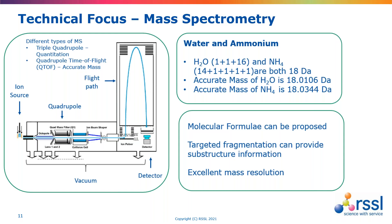An illustrative example: water (two hydrogens and one oxygen) has a nominal mass of 18 Daltons, as does ammonium (one nitrogen at 14 plus four hydrogens). These would be very difficult to distinguish by nominal mass alone. However, using accurate mass and naturally occurring isotopes, water has an accurate mass of 18.01 and ammonium 18.03, so our mass spectrometer can very easily distinguish the difference. Because of this, we can generate molecular formulas for unknown compounds and, by fragmenting targeted ions in the collision cell, investigate fragment ions to generate substructure information of an impurity.